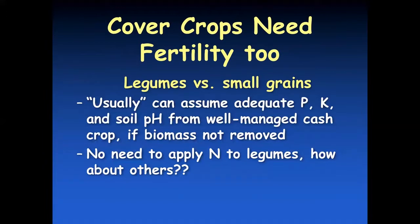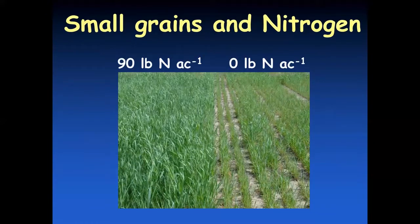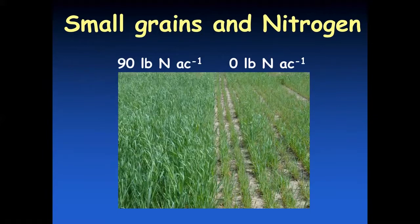If there's no need to apply nitrogen to legumes, what about all the others — the grasses, forbs, brassicas? As you can see, there's a huge difference between a cereal grain that's had 90 pounds per acre of nitrogen applied versus no nitrogen. With zero nitrogen, there's very little growth compared to the fertilized crop. In a lot of cases, it may be really hard to recover the money already spent on seed if you don't put some fertilizer out to boost it. It makes a huge difference in how much mulch you can get, how much soil erosion you prevent, and how much water infiltration you'll get later in the summer.